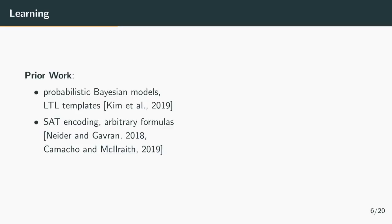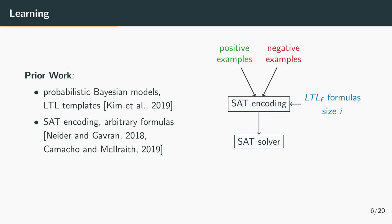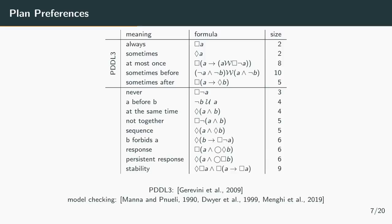There also exists prior work for learning of temporal preferences in a planning setting. One work by Kim et al uses probabilistic Bayesian models but relies on LTL templates. Another approach is based on SAT encoding and can learn arbitrary LTL formulas. Therefore we chose the second approach. This works as follows. You encode the positive and negative examples and the LTL formula of a given size into a SAT problem. And if this problem is solvable then the satisfying assignment can be used to reconstruct the formula which perfectly identifies the input examples. If that SAT problem is not solvable then you increase the size of the formula. In the following we focus on plan preferences which are either used in PDDL3 or are commonly used preferences in model checking.